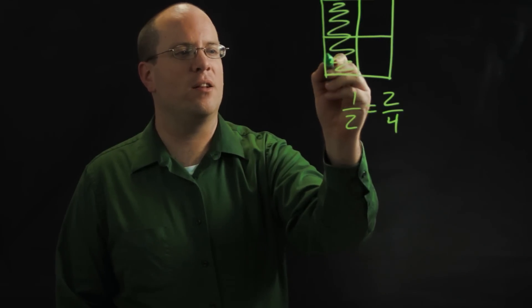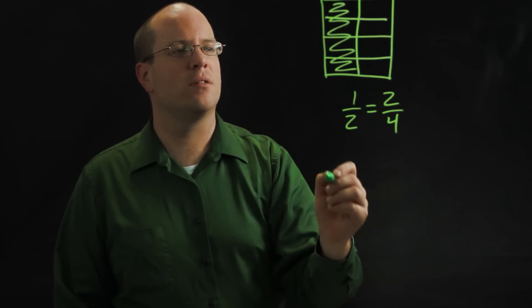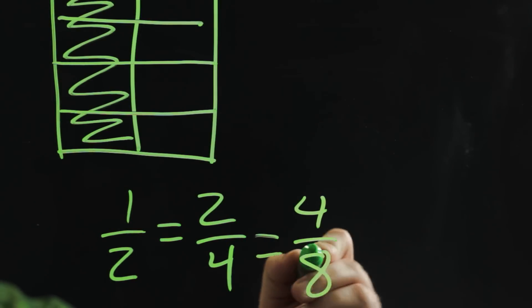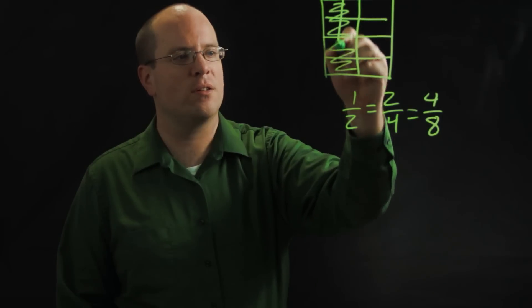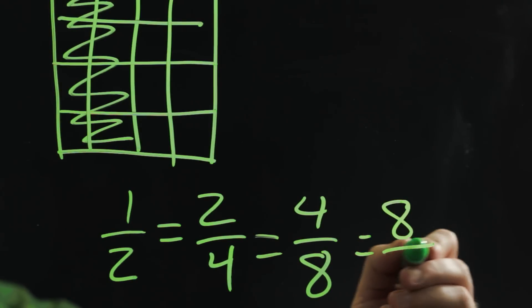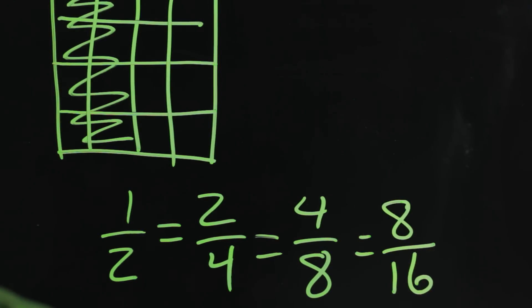Now I can continue to cut it into equal pieces and not change what I've shaded and come up with more equivalent fractions to one half. And I can do this as many times as I want to and I will still have an equivalent fraction.